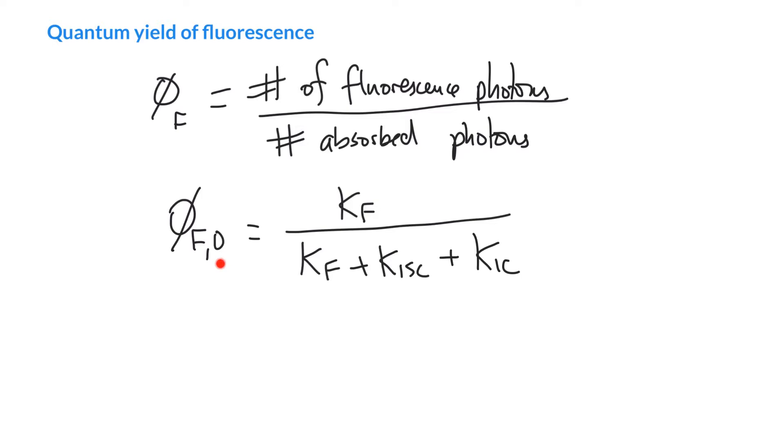And I've introduced a new thing down here, a new subscript here. This is a zero. And what the zero means is that this is in the absence of a quencher. So it's in the absence of a quencher, which we're going to use the symbol Q for. And a quencher is just something that can react with the excited state. And when it reacts with the excited state, it deactivates it and prevents it from releasing a fluorescence photon.